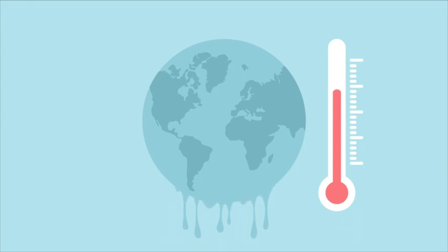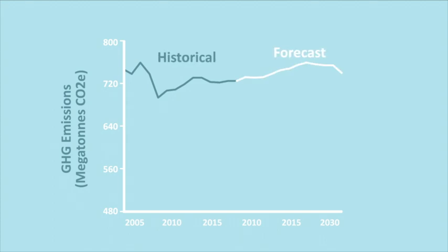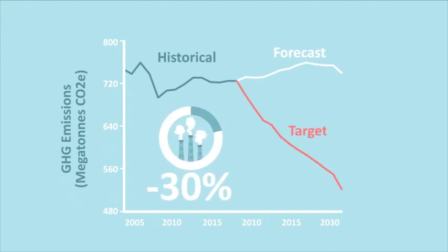Addressing climate change might be the largest hurdle the world has faced in generations. As part of the Paris Climate Agreement, Canada has agreed to reduce its greenhouse gas emissions to 30% below 2005 levels by 2030.